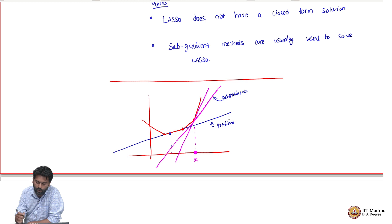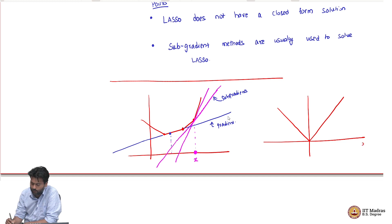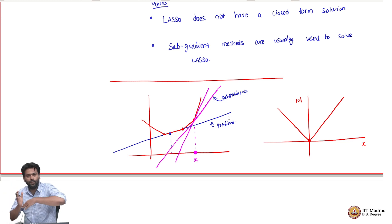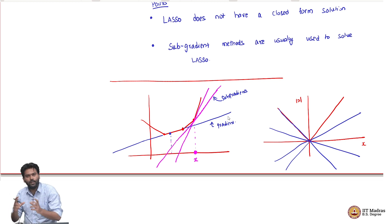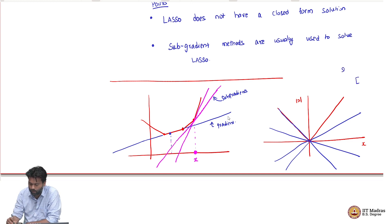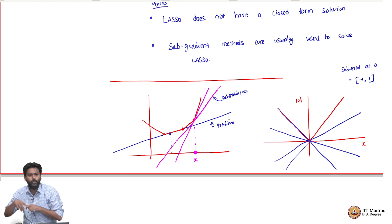This is relevant for us because the L1 penalty is an absolute value function, which looks like two pieces of linear functions attached at a point. It is not differentiable at zero, but it has sub-gradients. Multiple lines are sub-gradients at that point — in fact, for the absolute value function in one dimension, the sub-gradient at zero is any value between minus one and one. Any line with such a slope will completely lower bound the absolute value function, and that is called a sub-gradient.